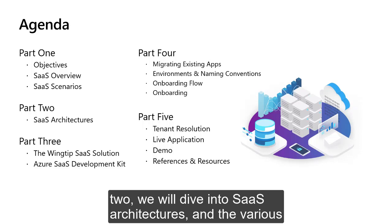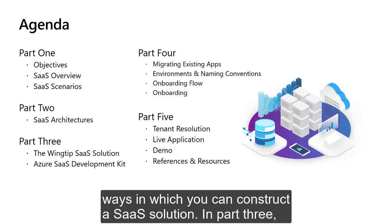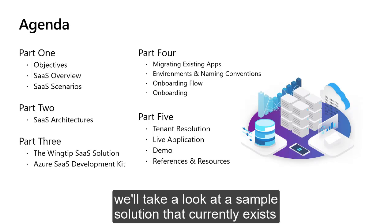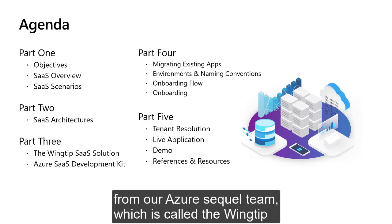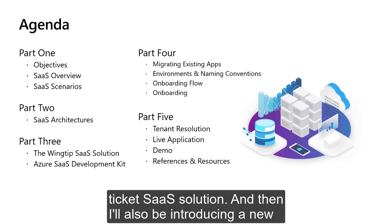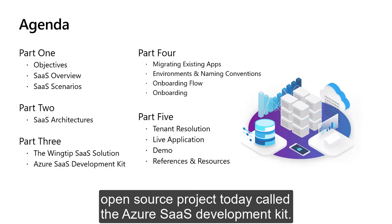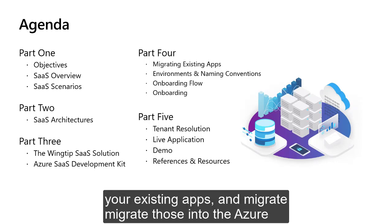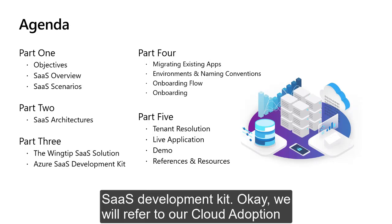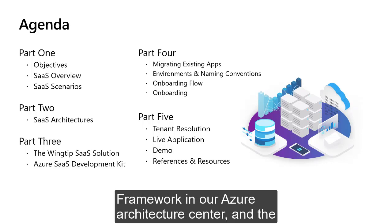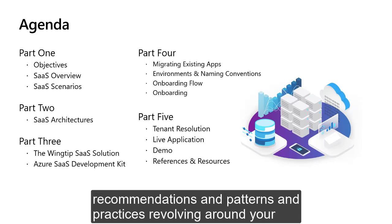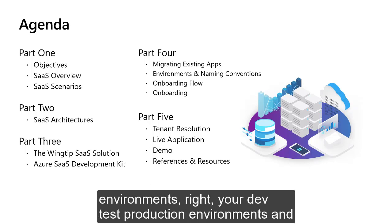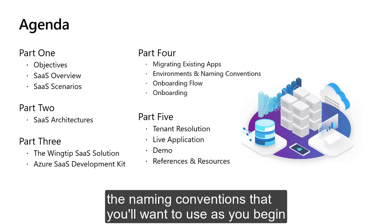In Part Two, we'll dive into SaaS architectures and the various ways to construct a SaaS solution. In Part Three, we'll look at a sample solution from our Azure SQL team called the Wingtip Ticket SaaS solution, and I'll also be introducing a new open source project called the Azure SaaS Development Kit. In Part Four, we'll look at how you can take your existing apps and migrate them into the Azure SaaS Development Kit, referencing the Cloud Adoption Framework, Azure Architecture Center, and recommendations around dev/test/production environments and naming conventions.